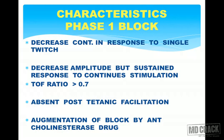Characteristics of phase 1 block: there is decreased contraction in response to a single twitch, decreased amplitude but sustained response to continuous stimulation, TOF ratio less than 0.7, absent post-tetanic facilitation, and importantly, augmentation of block by anticholinesterase drugs. If a patient is under phase 1 block of succinylcholine and you administer an anticholinesterase, it will augment the block rather than produce recovery.